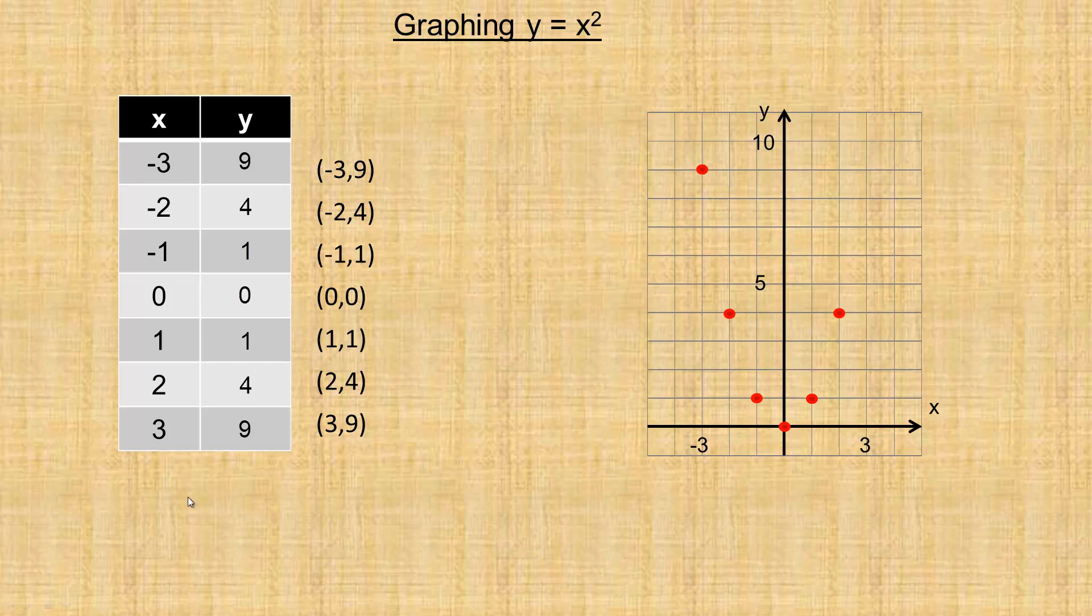If I had made this table a little bit longer, let's say I put 4 here, or negative 4 at the top. 4 squared is 16. So that's the point 4 comma 16. The problem with that, so here's 4.